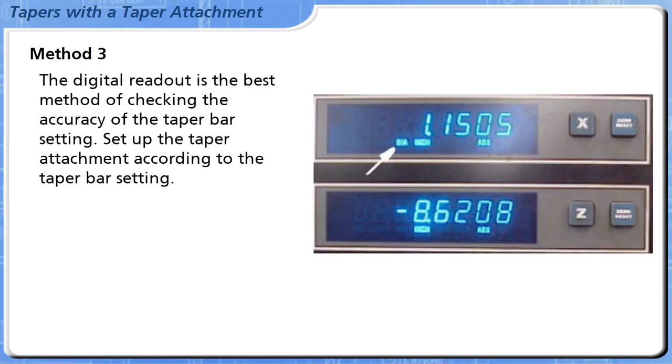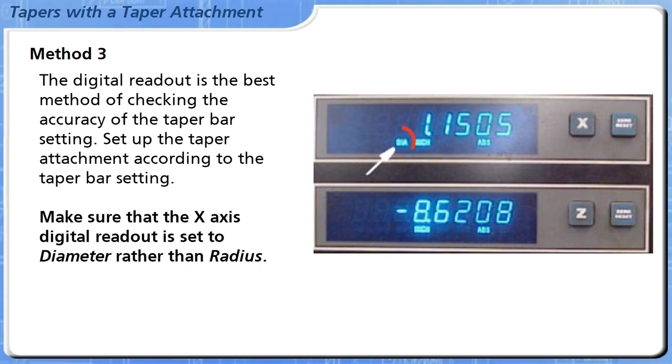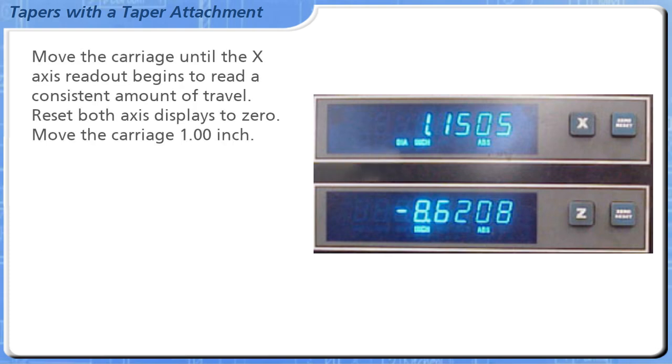Method 3: The digital readout is the best method of checking the accuracy of the taper bar setting. Set up the taper attachment according to the taper bar setting. Make sure that the x-axis digital readout is set to diameter rather than radius. Move the carriage until the x-axis readout begins to read a consistent amount of travel. Reset both axis displays to zero.